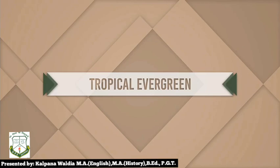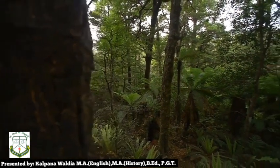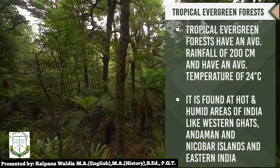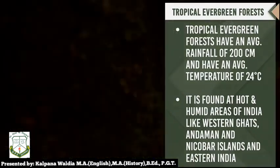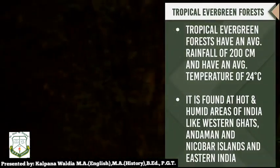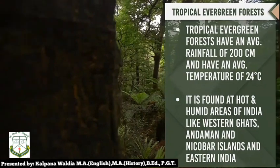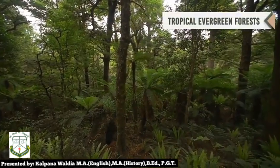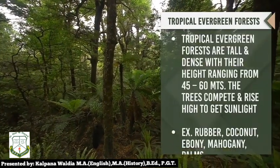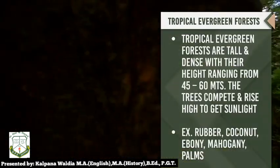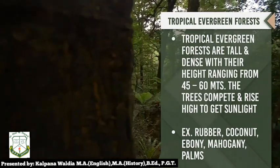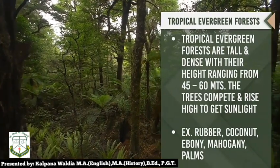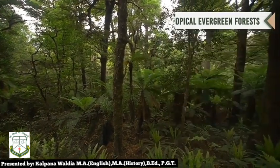Now let us see the features of tropical evergreen forest. Tropical evergreen forests have an average rainfall of 200 centimeters and an average temperature of 24 degrees Celsius. They are found in the hot and humid areas of India like the Western Ghats, Andaman and Nicobar, and Eastern Ghats. These forests are tall and dense, with height ranging from 45 to 80 meters. The trees compete and rise in height to get sunlight — for example, rubber tree, coconut tree, ebony tree, mahogany, and palm trees.